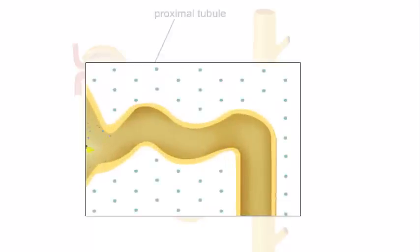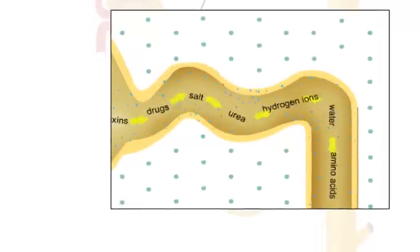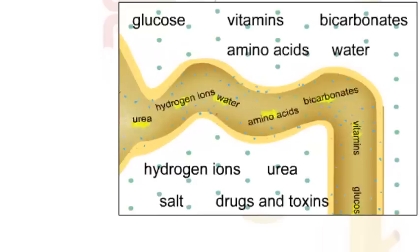Many of the important nutrient molecules that enter the filtrate must be actively pumped out of the nephron and back into the blood. This is the process known as tubular reabsorption. Although tubular reabsorption occurs along the entire length of the nephron, the bulk of this process takes place in the proximal tubule.